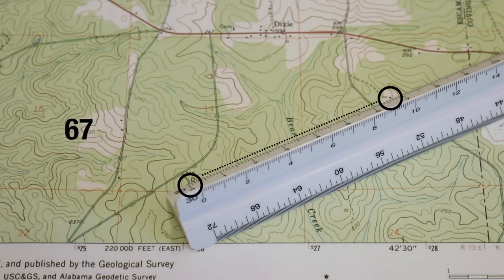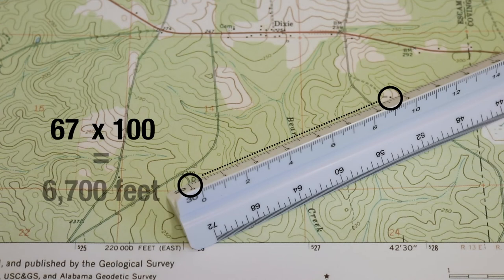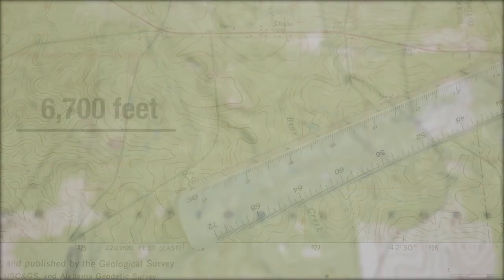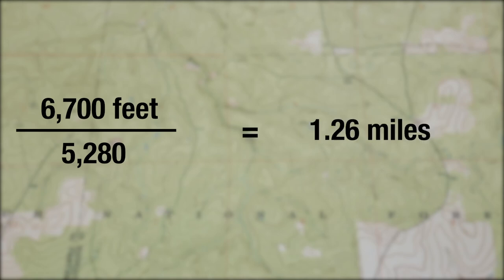Remembering that each tick mark is equal to 100 feet, we multiply the number of tick marks by 100: 67 times 100 equals 6,700 feet. To determine distance in miles, divide the number of feet by 5,280 feet in a mile. So the straight line distance in miles between the two points is 6,700 divided by 5,280, which equals 1.26 miles.